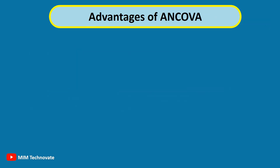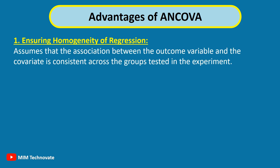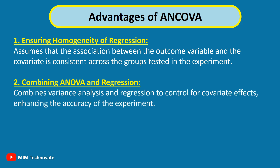Advantages of ANCOVA. Ensuring homogeneity of regression: ANCOVA is used when the association between the outcome variable and the covariate is consistent across the groups tested in the experiment. Combining ANOVA and regression: ANCOVA combines variance analysis and regression to control for covariate effects, enhancing the accuracy of the experiment.